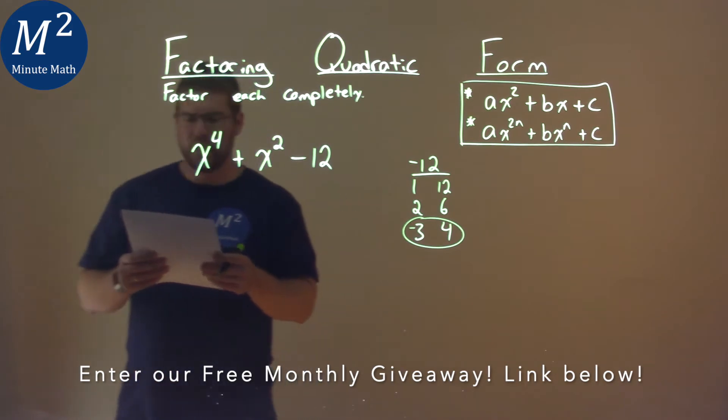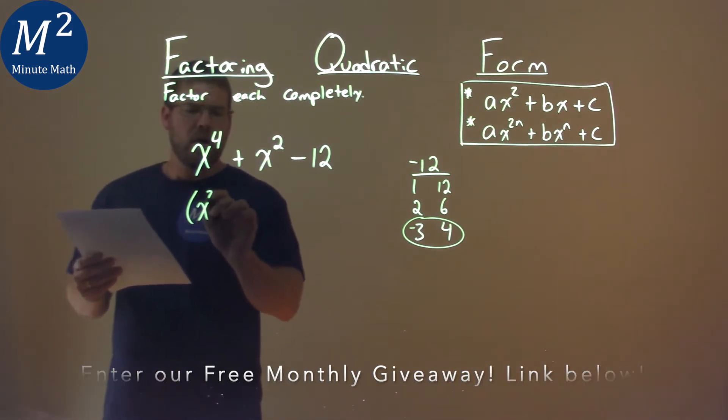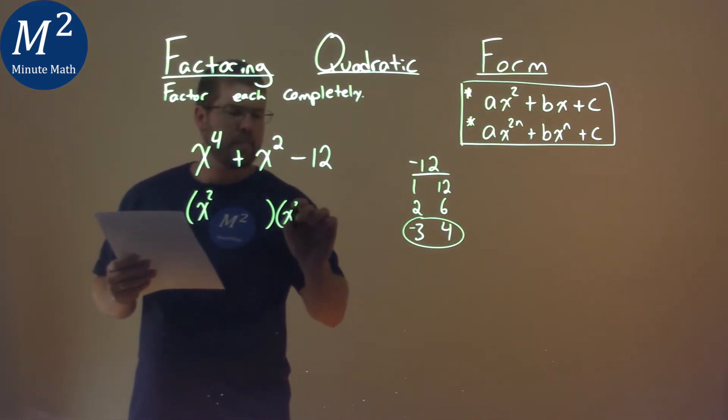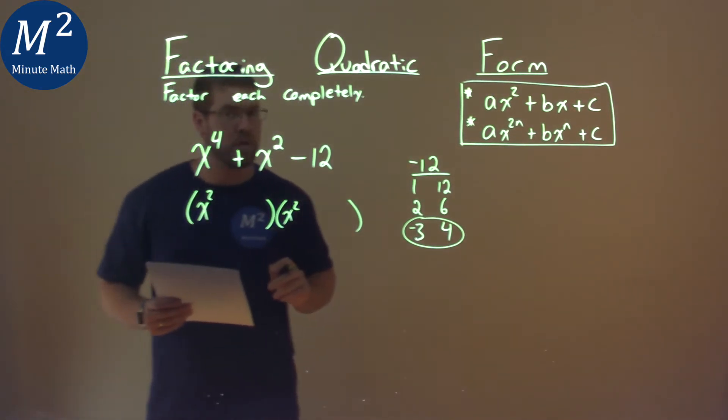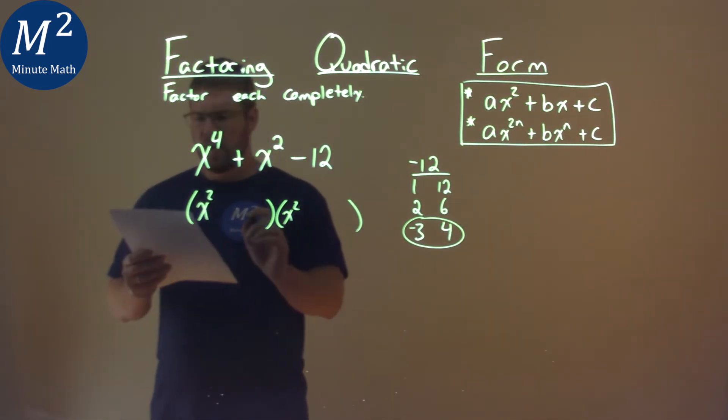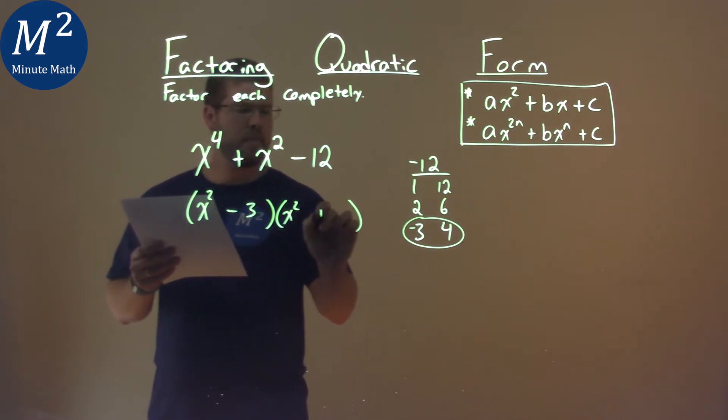So let's work with this now. Our form here would be x squared times an x squared, which gives us x to the fourth. Be careful. The minus 3, and then the plus 4.